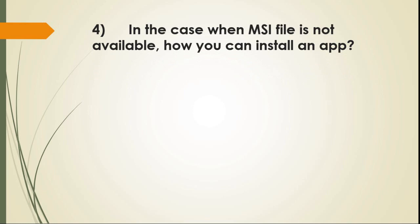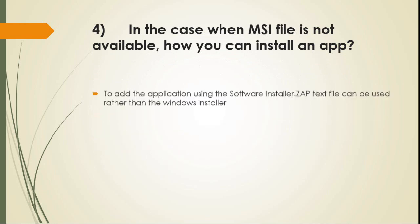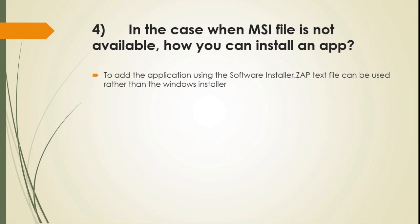Question 4: In the case when an MSI file is not available, how can you install an app? To add the application using the software installer, a .zap text file can be used rather than the Windows installer.